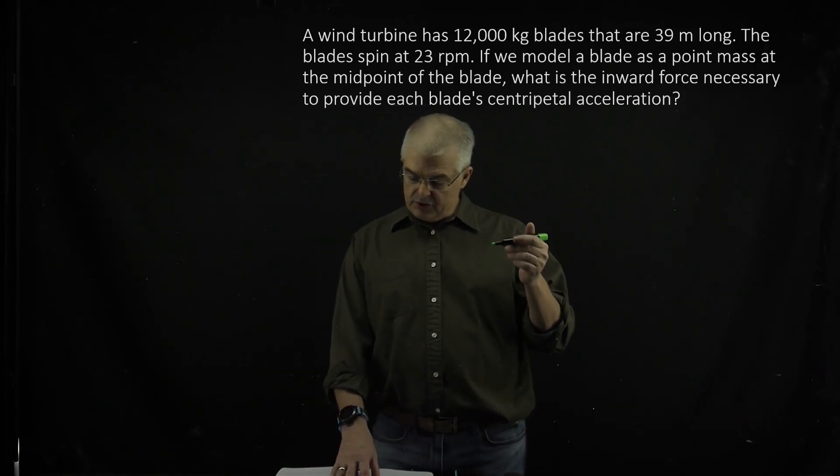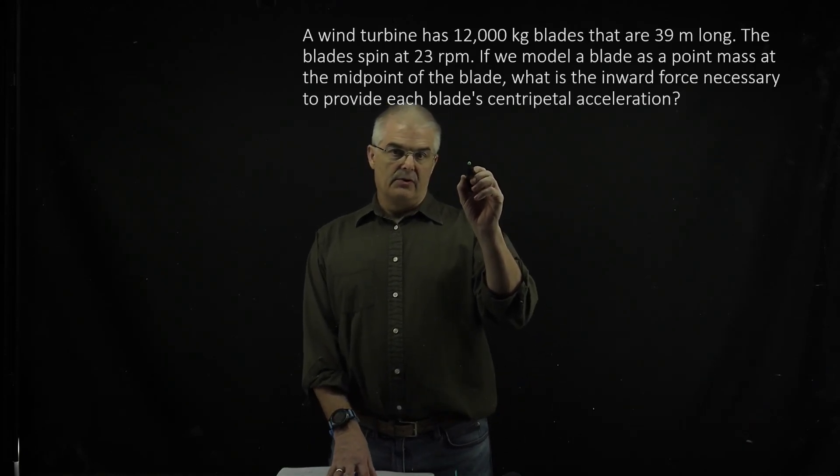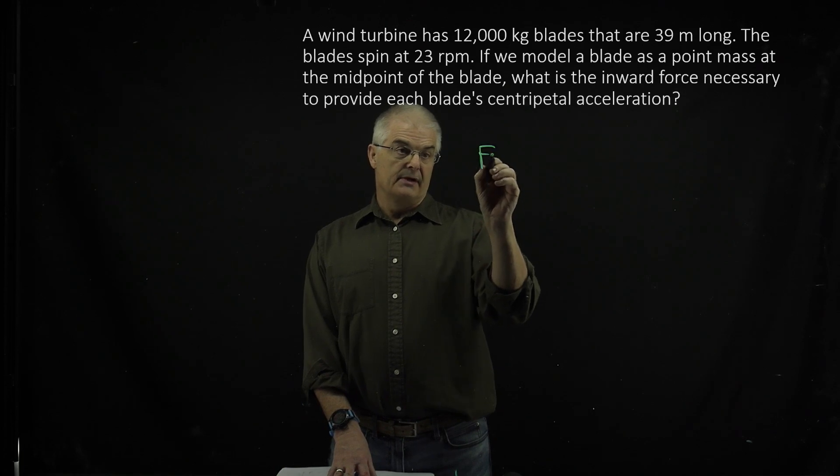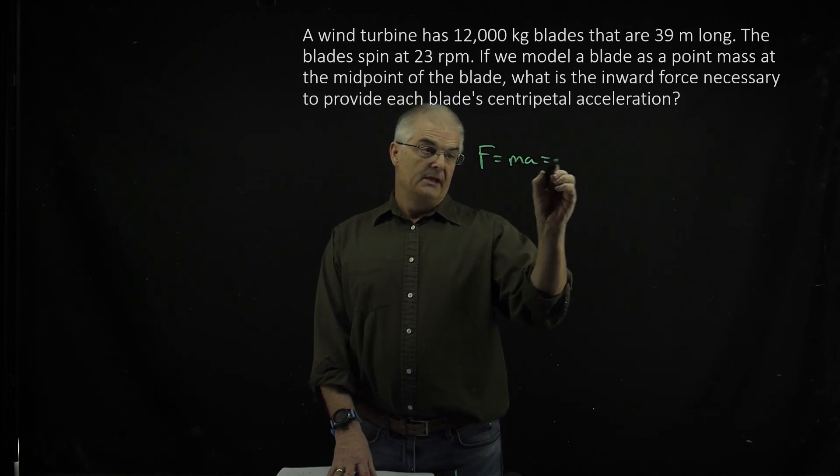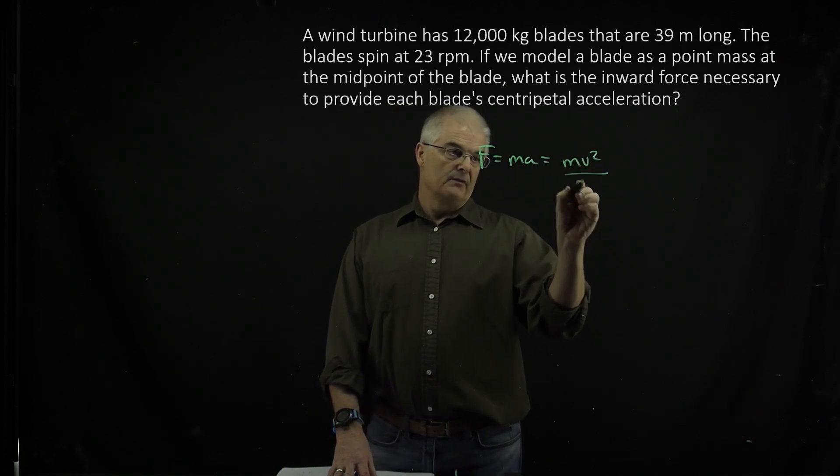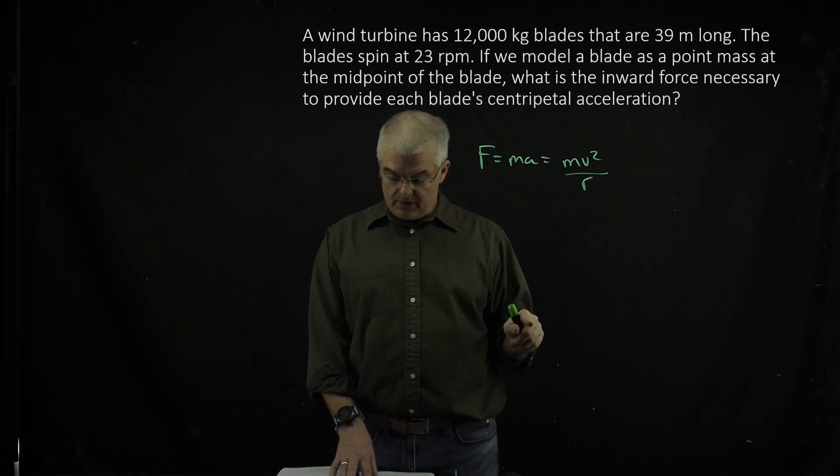So the classic wind turbine question. Again, it's centripetal acceleration, so F equals MA equals MV squared over R. Centripetal acceleration is V squared over R.